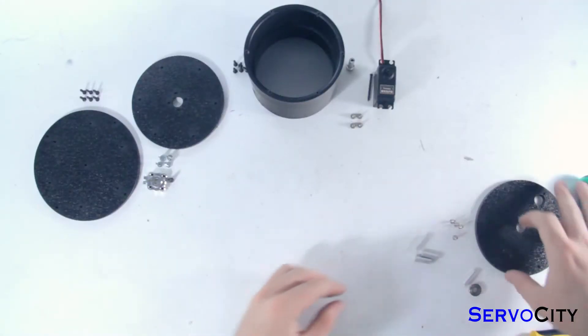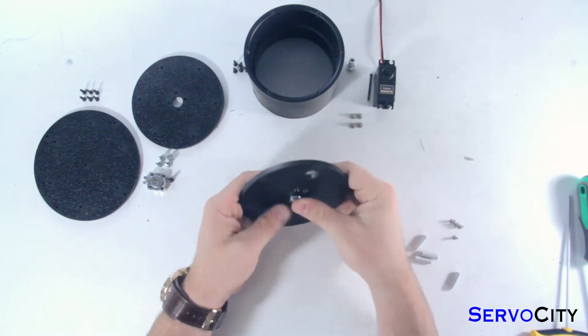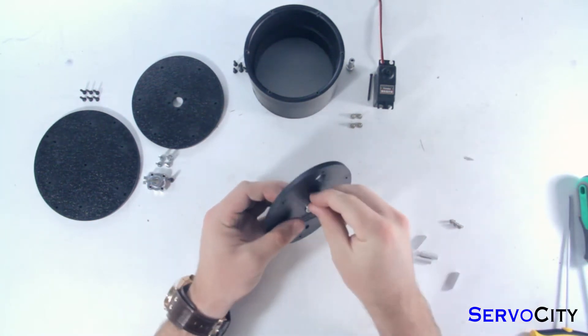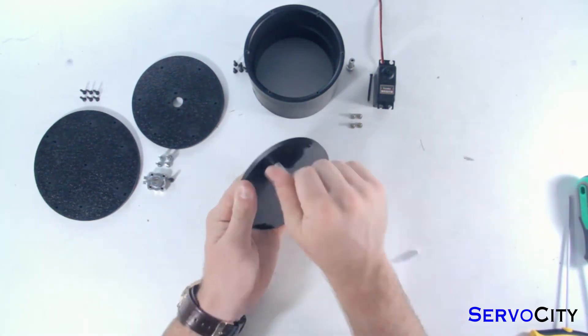You'll first press the ball bearing into the textured side of the plate, and then attach the standoffs to the smooth side of the plate using the screws.